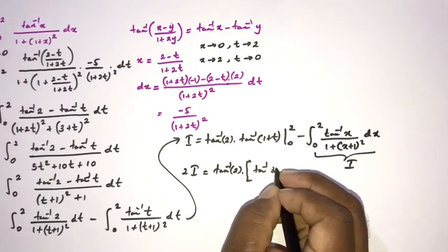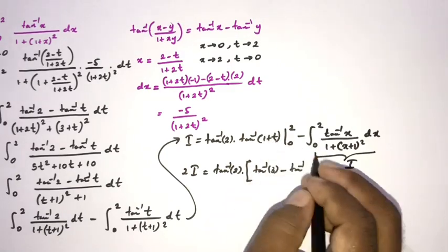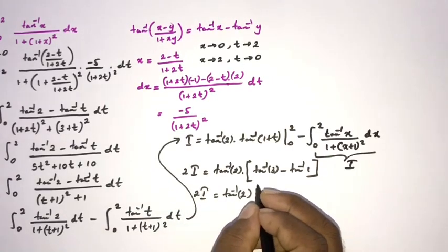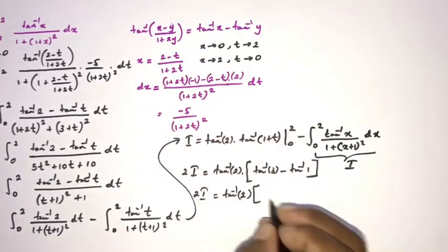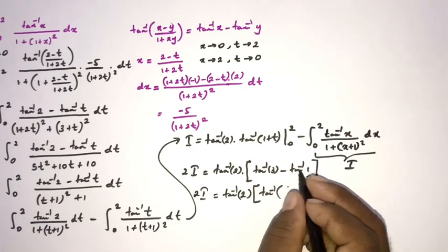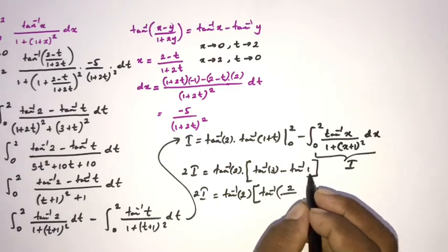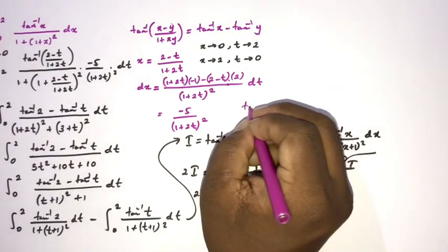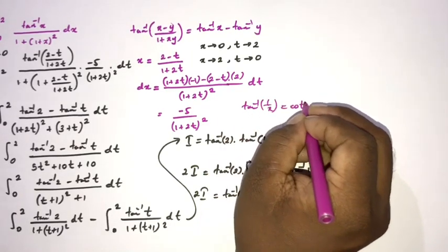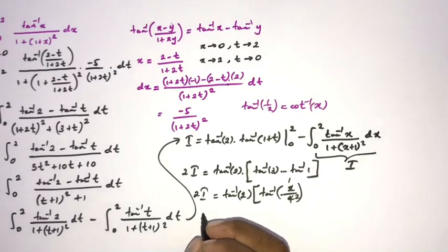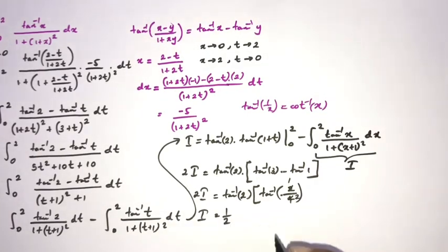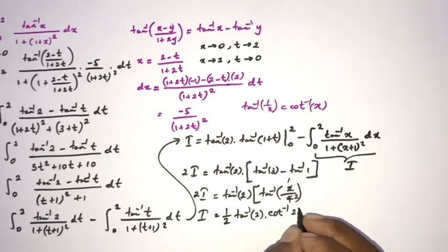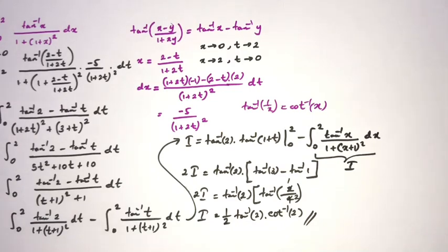So we have 2I equals inverse tan 2 times [inverse tan 3 minus inverse tan 1]. Applying the inverse tan subtraction formula: inverse tan 3 minus inverse tan 1 equals inverse tan of (3 minus 1)/(1 plus 3 times 1) equals inverse tan(2/4) equals inverse tan(1/2). Using the identity inverse tan(1/x) equals inverse cotangent of x, we get I equals one half times inverse tan 2 times inverse cotangent 2.